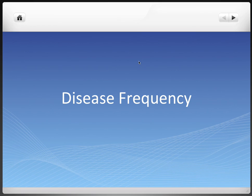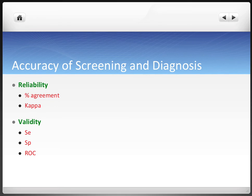Hey everyone, this is Ryan and in this video we'll be talking about disease frequency. In the last video we talked about the accuracy of screening and diagnosis methods and how reliability and validity were the two main measurements used to calculate accuracy. It's important to note that reliability and validity are measurements that are important for all studies — all good studies should report their reliability and validity of the methods that they use.